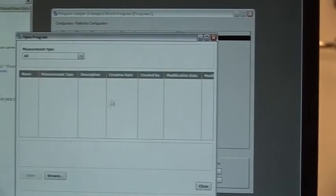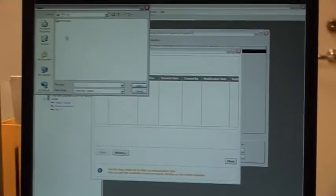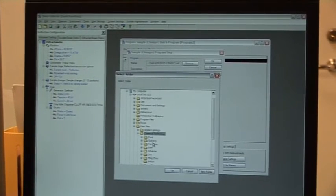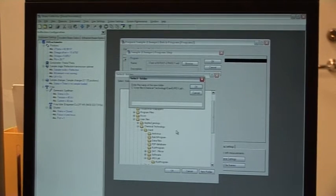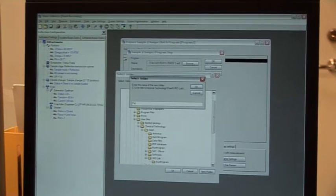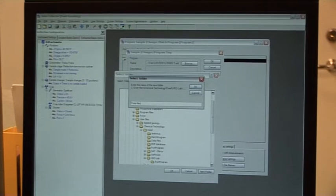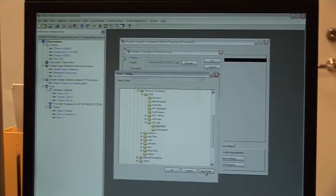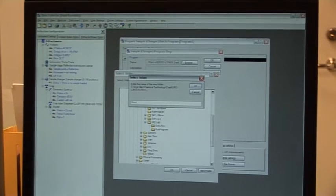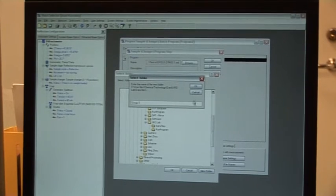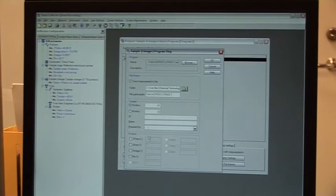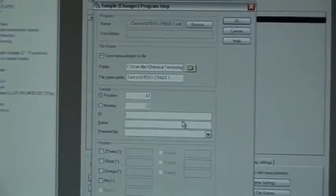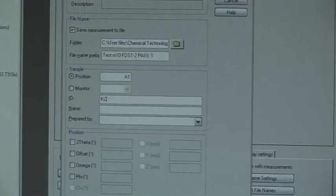So we just go to Insert. Basically we pick our program and then we pick a folder where we want to save the data. Here we write, we can see that it's calling for position A1. And then we write the sample ID, it's basically the sample name. For instance, first one was potassium chloride.